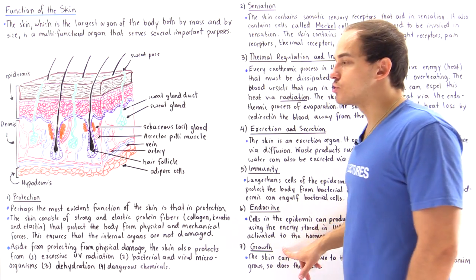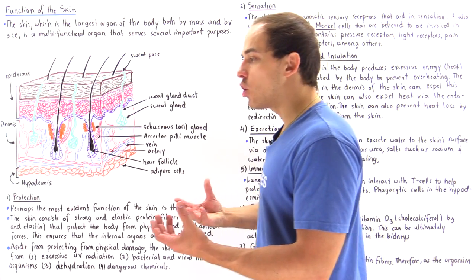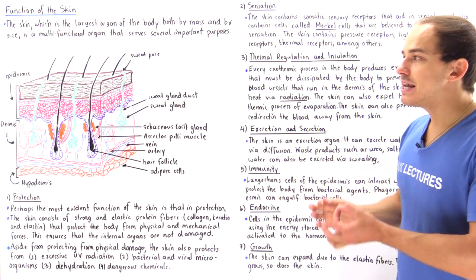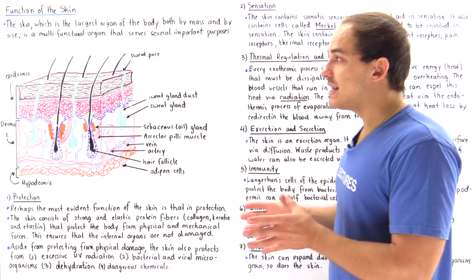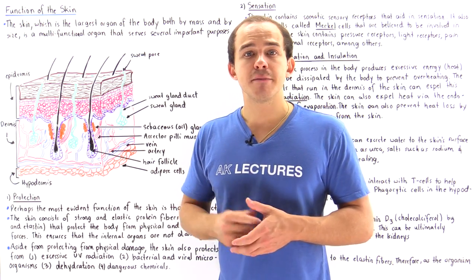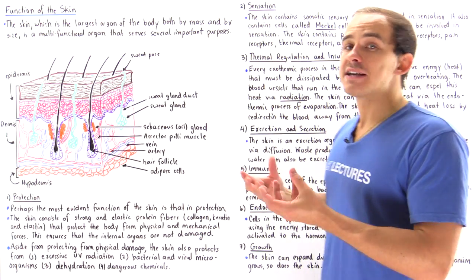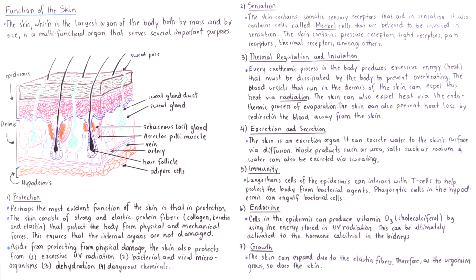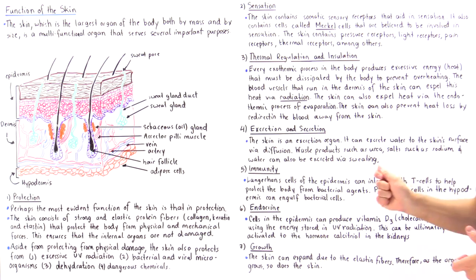The final function — function number seven — is growth. As the human body grows, including the bones and organs, the skin must grow along with everything else and be able to expand. The skin contains protein fibers known as elastin, and it is these elastin fibers that give the skin its flexibility and ability to expand as the organism grows. These are the seven important functions that the skin performs.